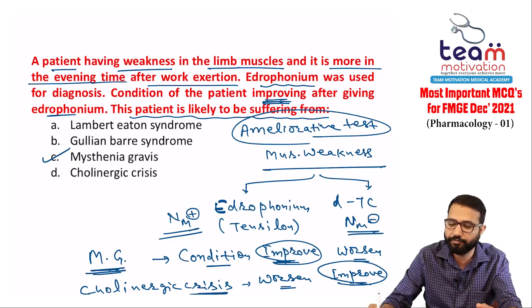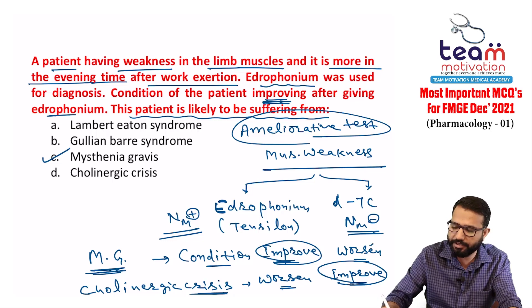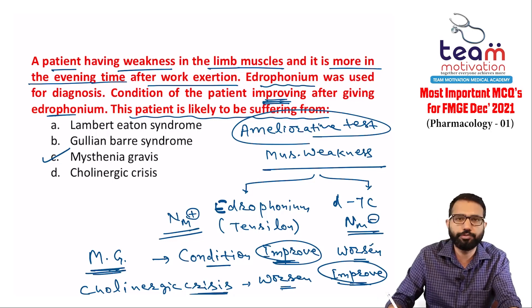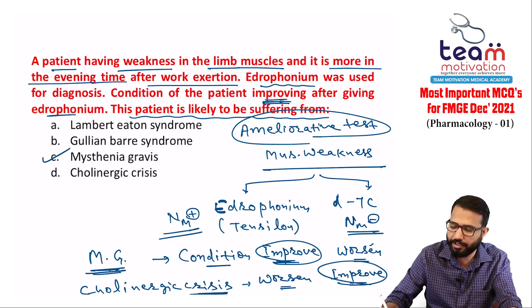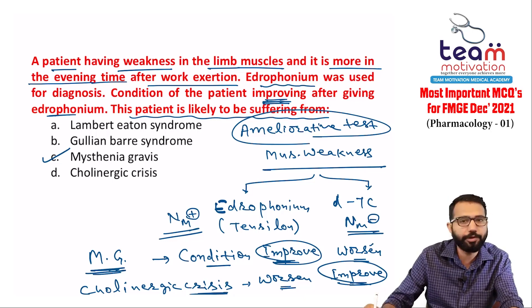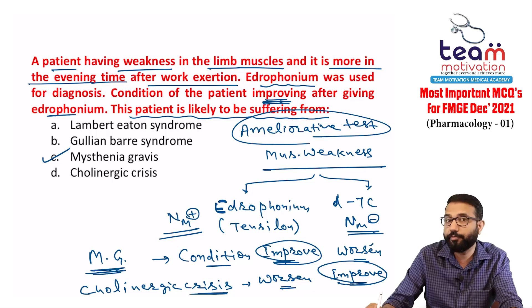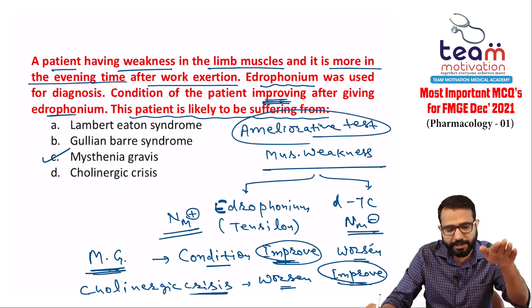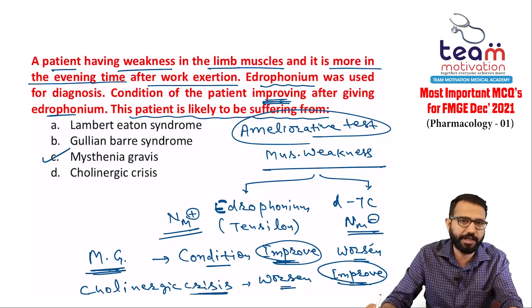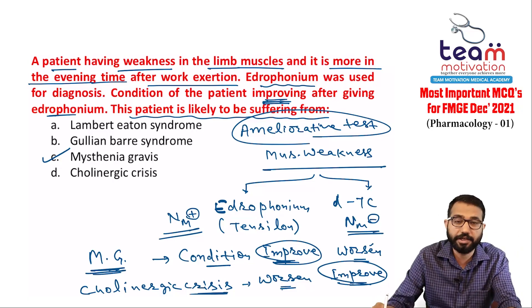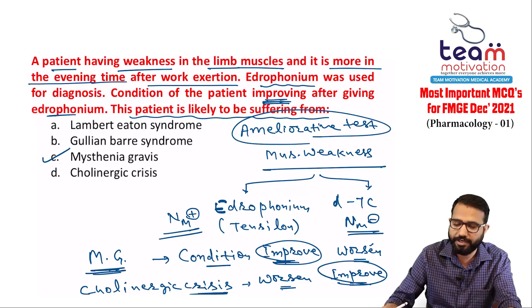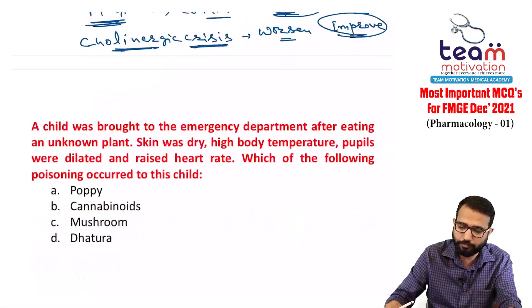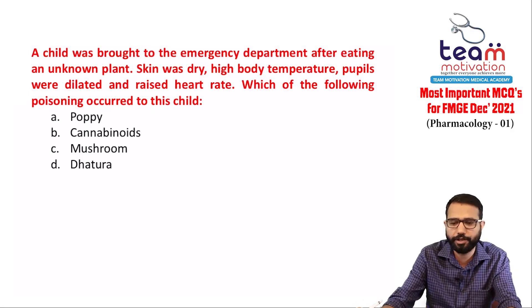Summary: edrophonium worsening = cholinergic crisis; D-tubocurarine improving = cholinergic crisis; D-tubocurarine worsening = myasthenia gravis. In this case, condition improved due to edrophonium, confirming myasthenia gravis. Treatment uses neostigmine, which is the same group as edrophonium.